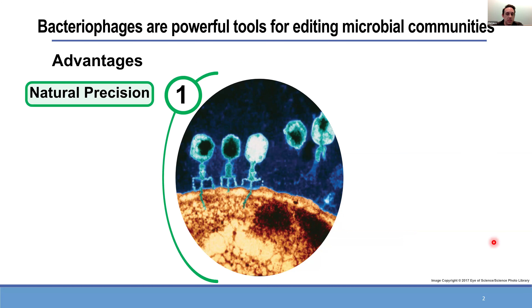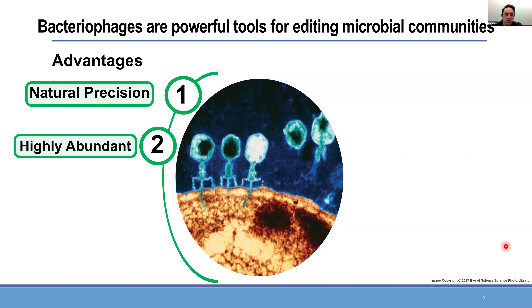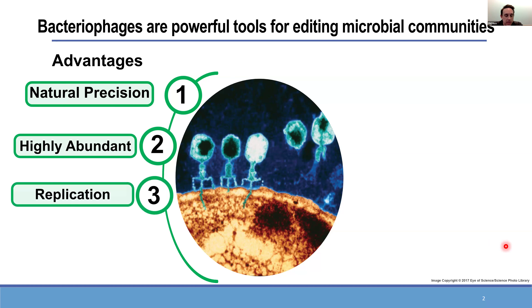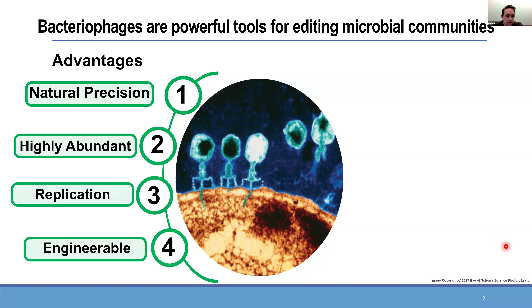Phages have several key advantages that make them interesting candidates for these applications. First, they're naturally precise — one phage typically only infects one or a few different kinds of bacteria. They're highly abundant — actually the most abundant organism in the biosphere, so it's easy to procure natural phages that might target a bacteria of interest. They replicate reliably, so they can self-dose to remove bacteria in a community. And most importantly for us, they're engineerable — we can go into their genome and modify them to make them more effective.